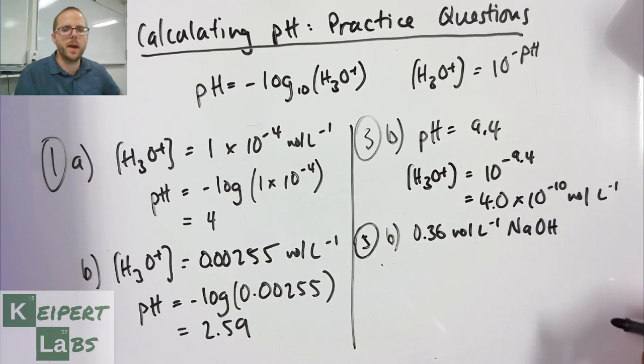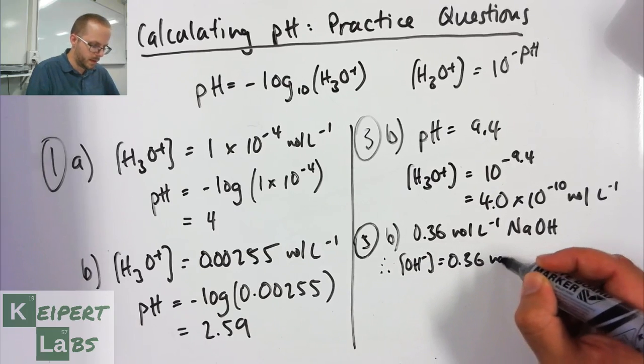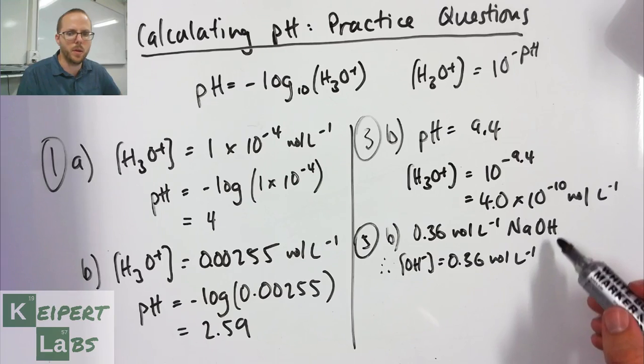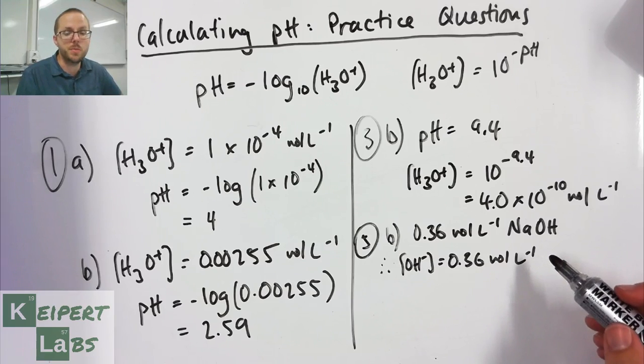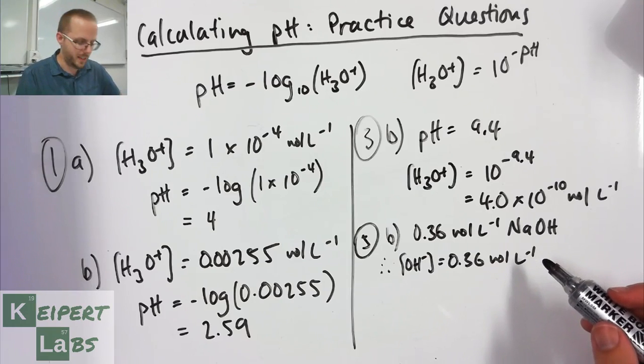I'm going to show you how we can connect these ideas of pOH and pH in this particular practice example. What I can see is therefore my hydroxide ion concentration is 0.36 moles per liter, because for every one mole of sodium hydroxide that dissolves, one mole of hydroxide ions will be formed. You can't assume that this happens in every case, but in this case it does.